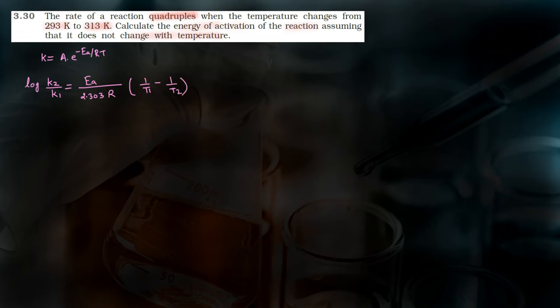अब यहाँ पर देखें क्या क्या given है। T1 की value दी हुई है 293 Kelvin, T2 कितना है — 313 Kelvin। Activation energy आपको निकालनी है। R की value हमें पता होती है — 8.314।